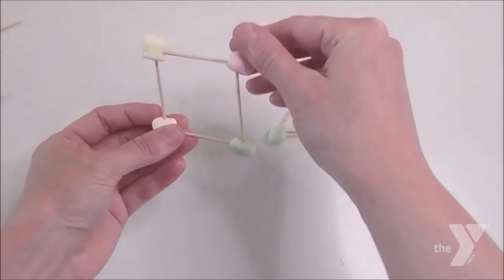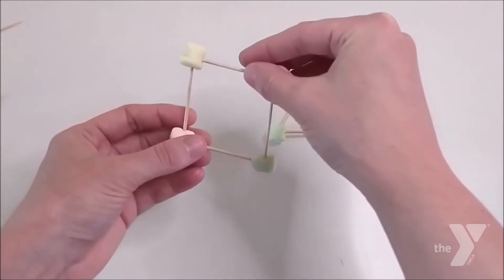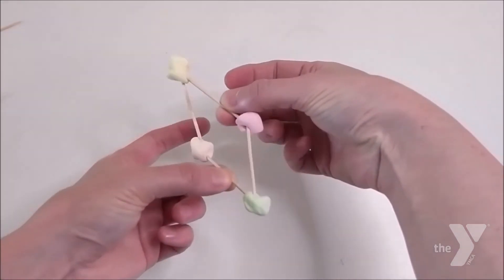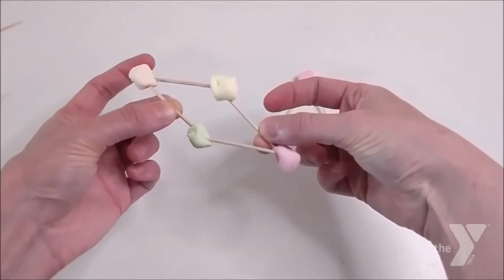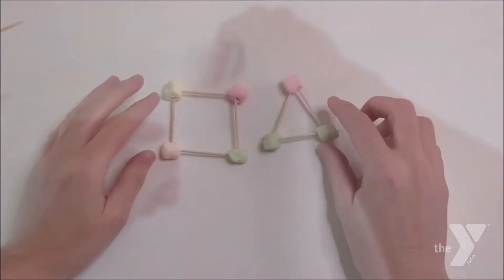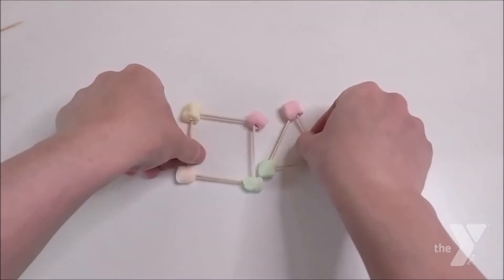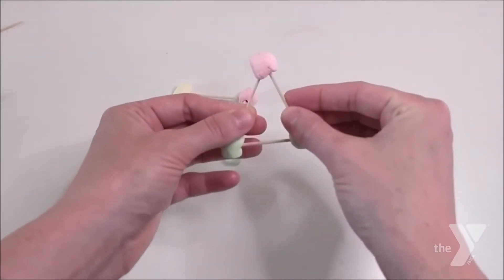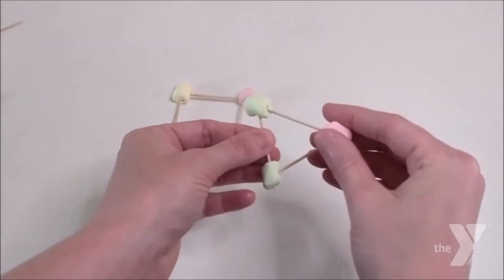A square, on the other hand, isn't so stable. It folds. You see, it folds into a different shape called a rhombus, which is kind of a funny word that means a sideways square type thing. So which shape do you think that architects would prefer if they were building a bridge or a building? Triangles or squares? If you're guessing triangles, you would be right.